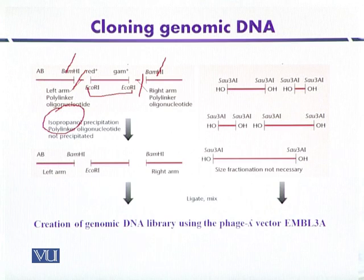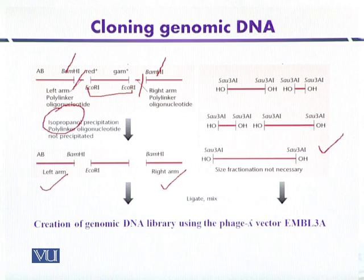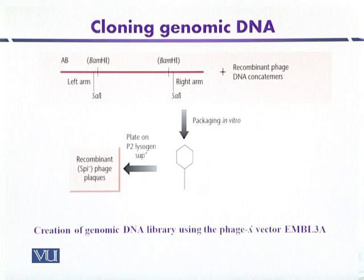The left and right arms of the vector DNA are retained and ligated with the target DNA containing the gene of interest. They are mixed together, ligation occurs, and the foreign DNA is incorporated. The construct is then used for in vitro packaging.